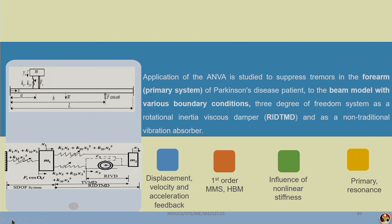Let us now use the non-linear active vibration absorber to suppress tremor in the forearm primary system for Parkinson's disease patients. Also, another system can be considered where we take a continuous system — a beam model with various boundary conditions — which can be treated as a 3-degrees-of-freedom system.